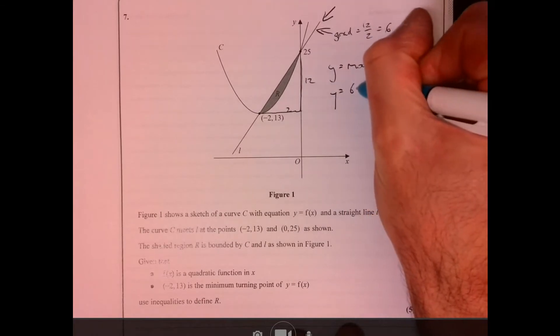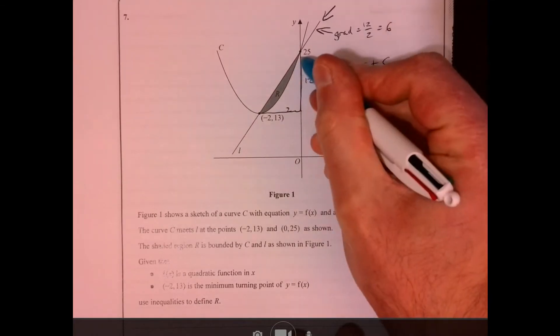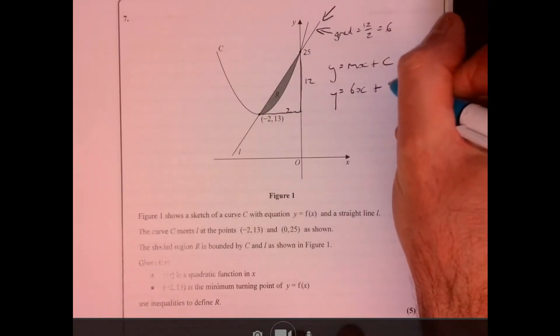I know the gradient is 6 and I can also tell straight away that the y-intercept is 25. Okay, so that's the nice one to do.